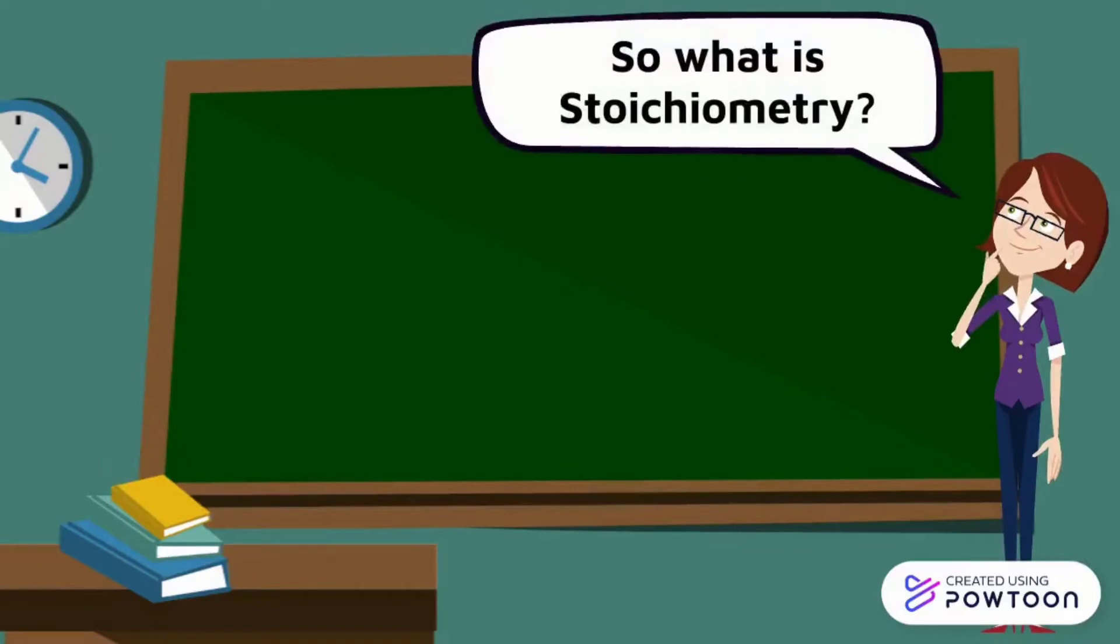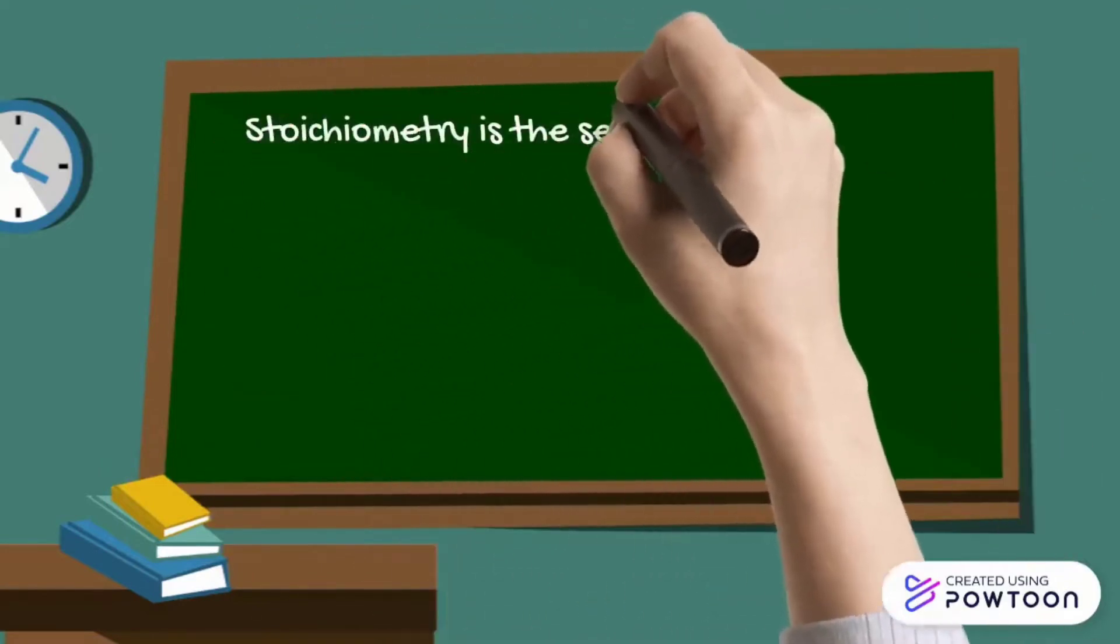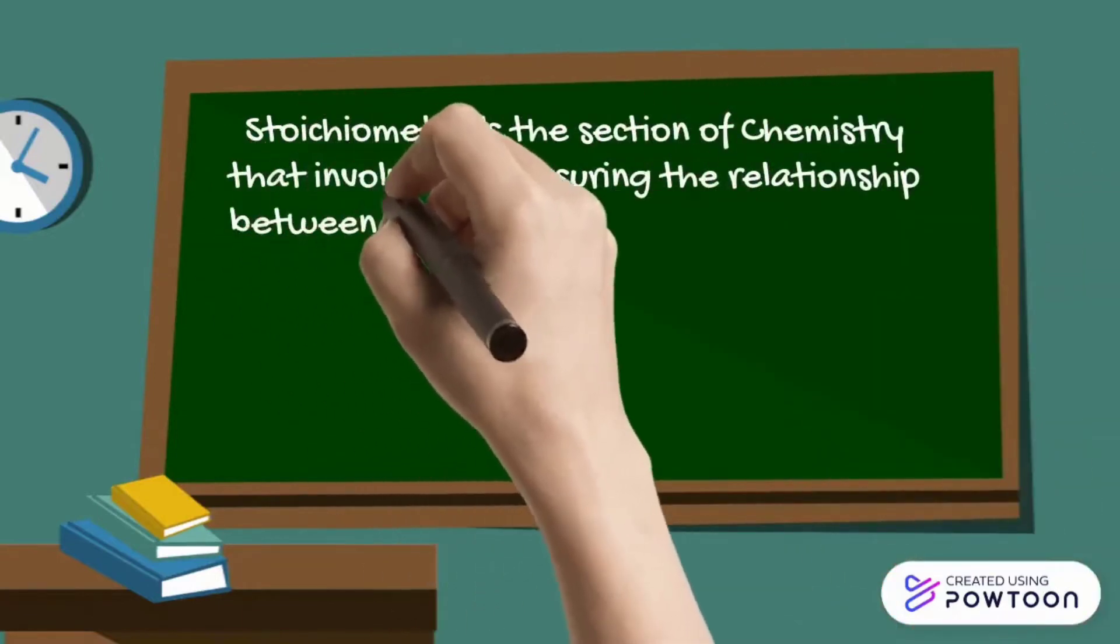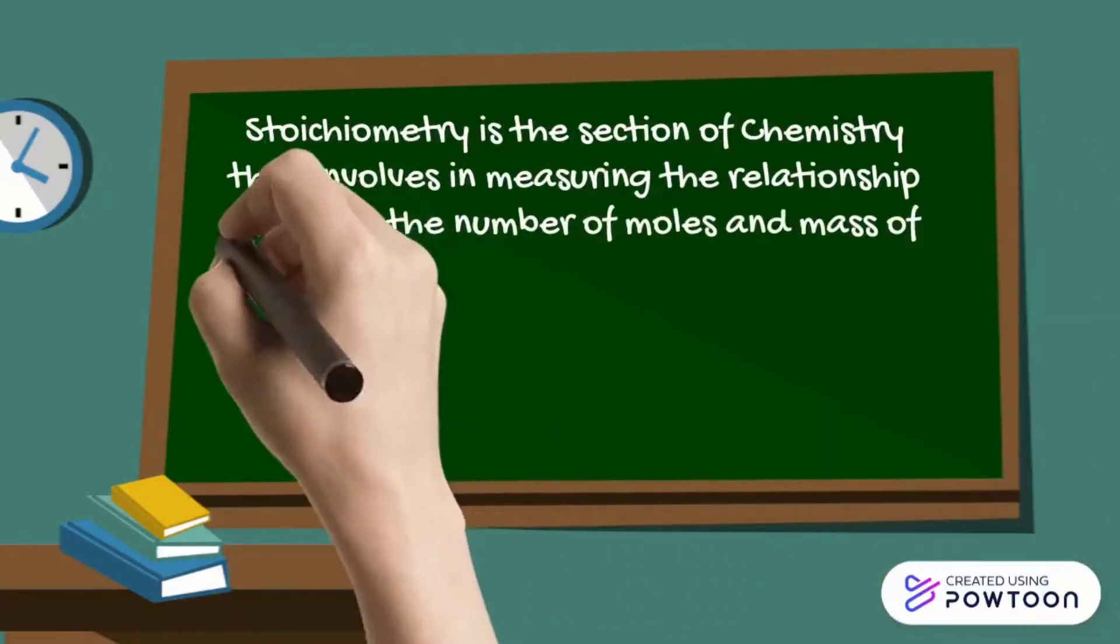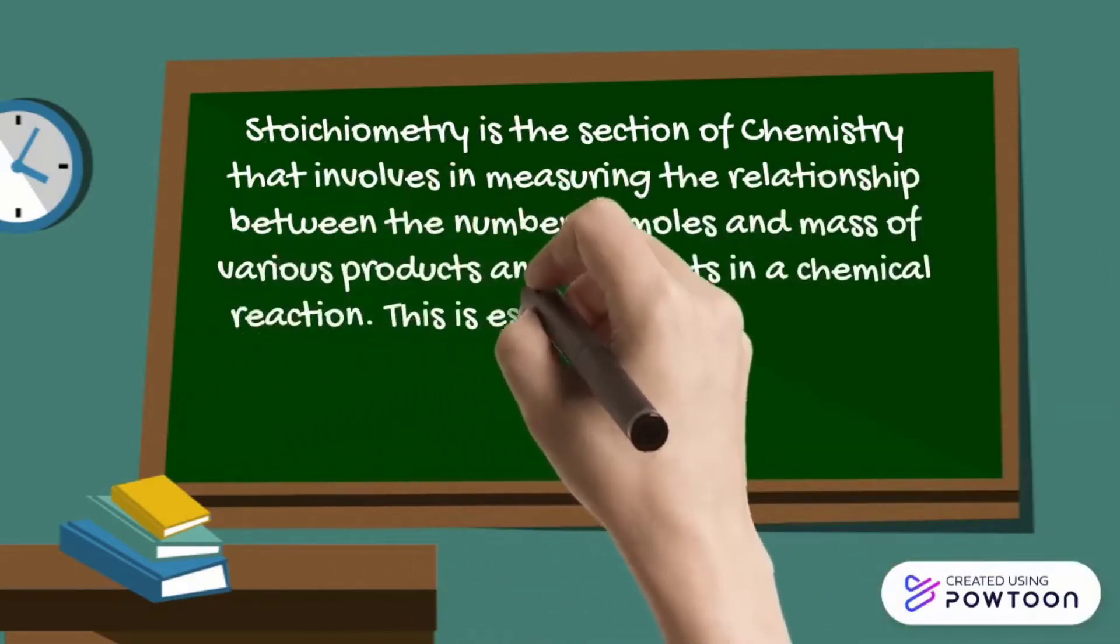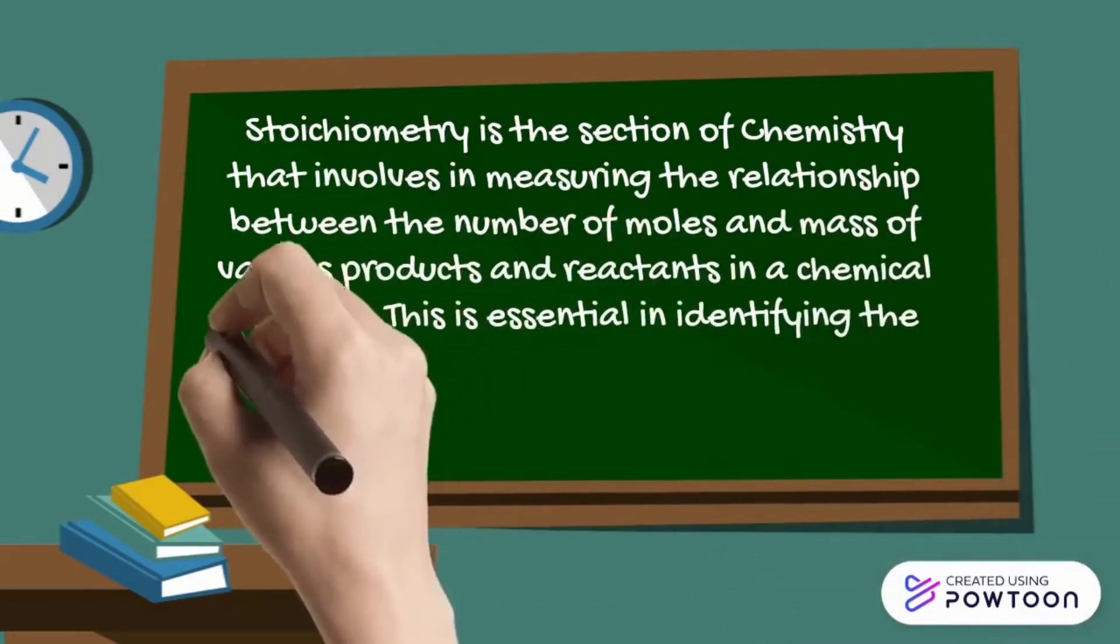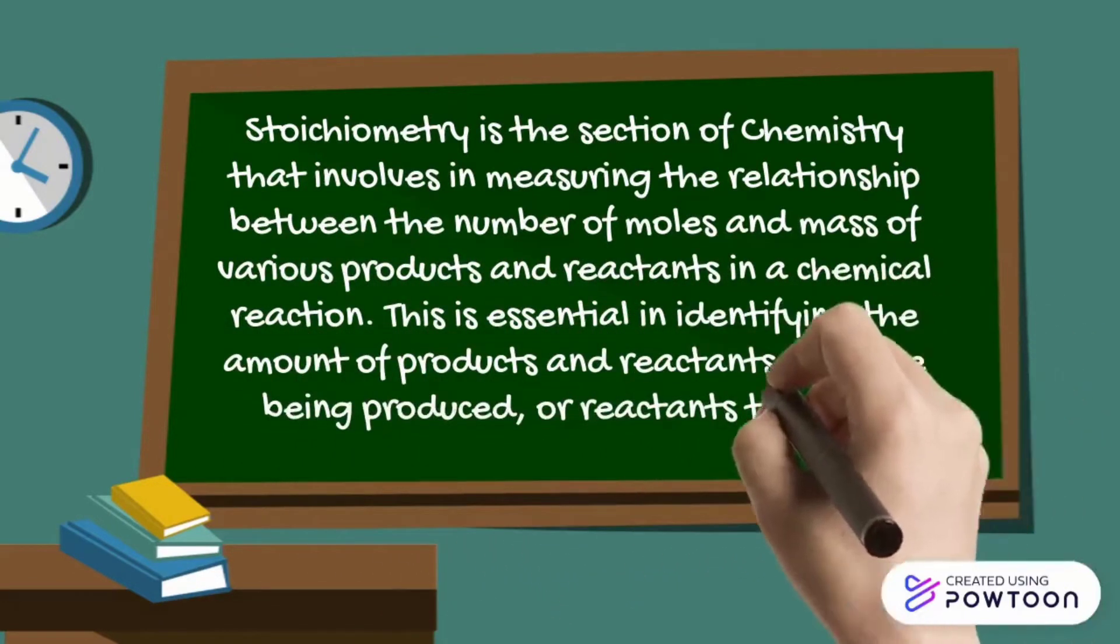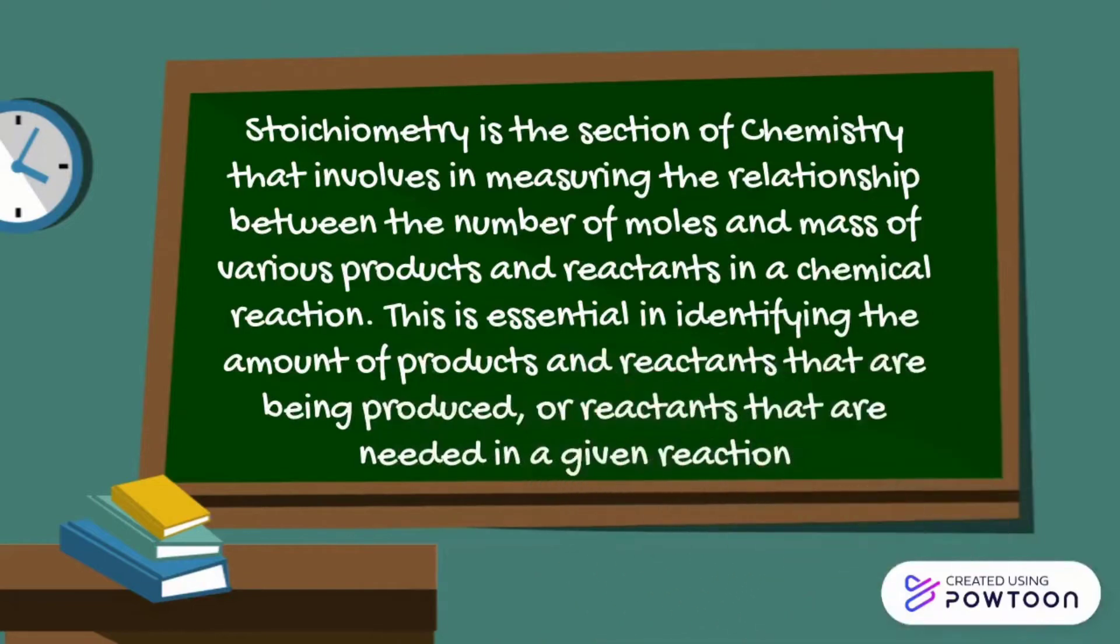So what is stoichiometry? Stoichiometry is the section of chemistry that involves measuring the relationship between the number of moles and mass of various products and reactants in a chemical reaction. This is essential in identifying the amount of products and reactants that are being produced or reactants that are needed in a given reaction.